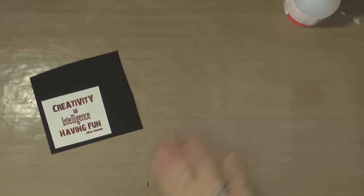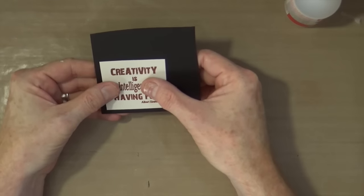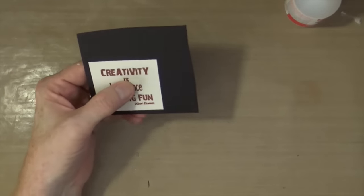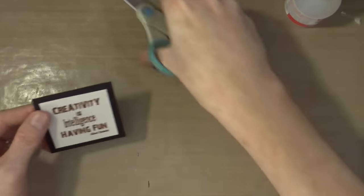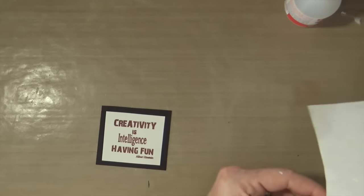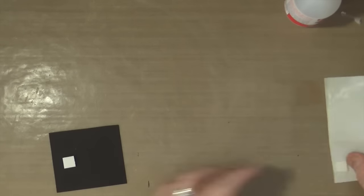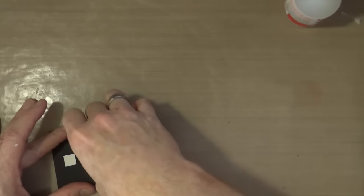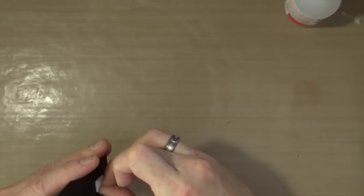Because I've used the multi-purpose glue, it doesn't set instantly. It does give you a little bit of wiggle room so that you can maneuver your word block so that you have an equal border all the way around. You have a little bit of play time to maneuver it before it grabs. As with the other elements, I'm just going to pop a couple of those foam pads onto the back and then I can stick it onto my canvas.